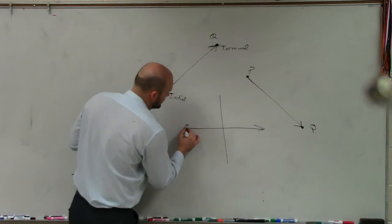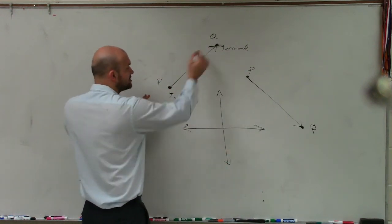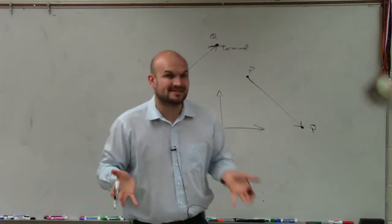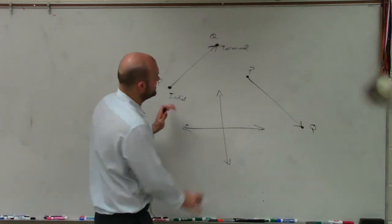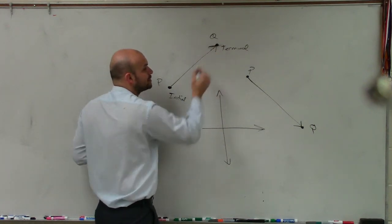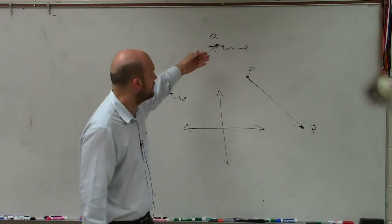So a lot of times, we'll have vectors more likely on the Cartesian coordinate plane. And therefore, we can actually use our points for our initial and our terminal side. But in the basics of what exactly is a vector, it is a line segment that includes not only the length of the line, which we call the magnitude, but also the direction.